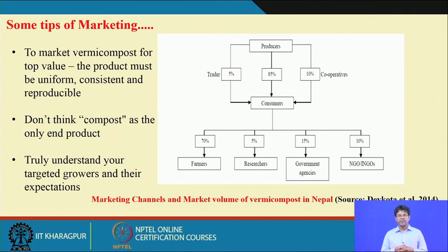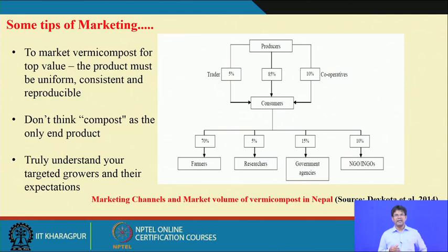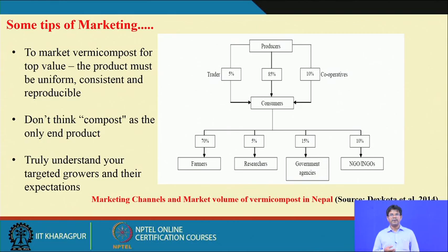Do not think of compost as the only end product in vermicomposting and organic farming. We must target consumers, understand what growers demand and need, and meet their expectations. A farmer growing rice needs compost suitable for rice — one that provides better production and quality while minimizing the cost of production.